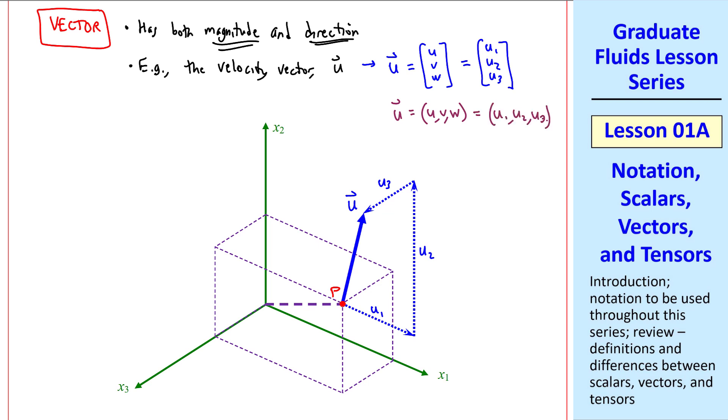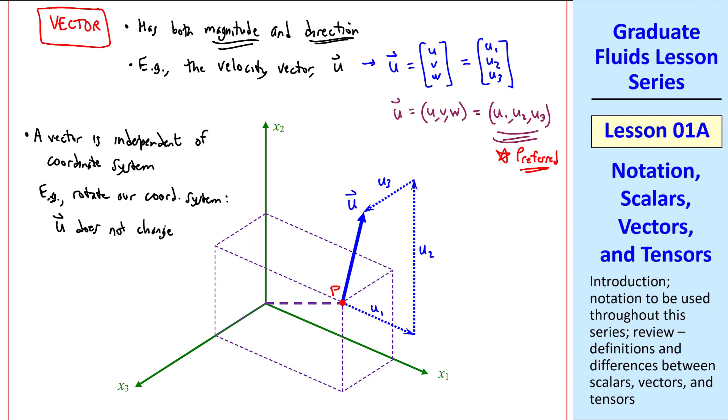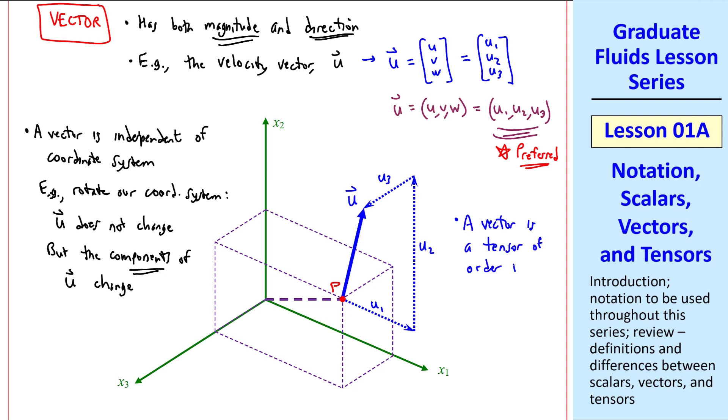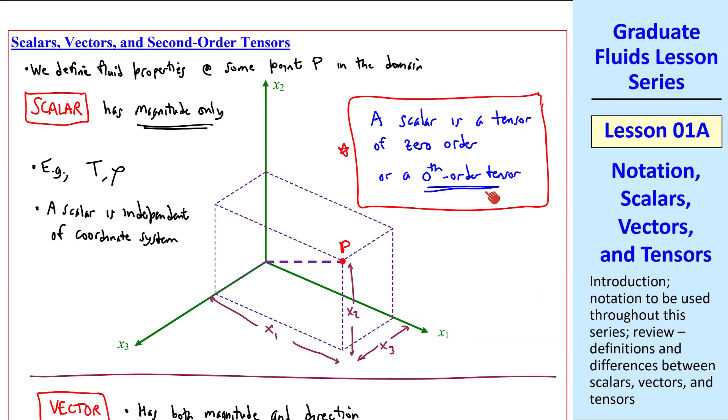This is the preferred way that I'll use in this lesson series. A vector is independent of coordinate system. For example, if we rotate this coordinate system that we drew, u does not change, but the components of u change. Physically, this velocity vector at point p remains the same regardless of what coordinate system we choose, but these components, u1, u2, and u3, depend greatly on the coordinate system. A vector is a tensor of order 1, or a first-order tensor, so it's one level higher than a scalar, which is a zeroth-order tensor.